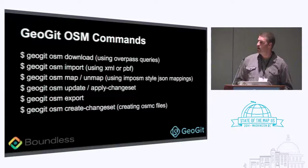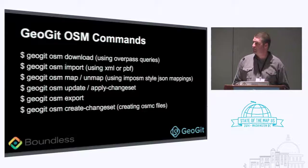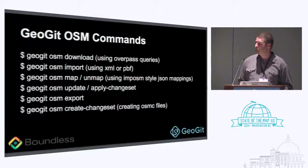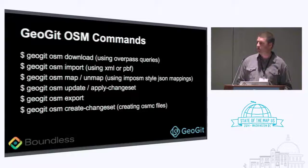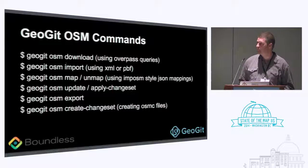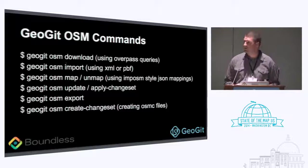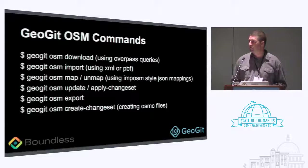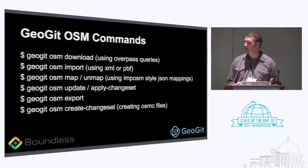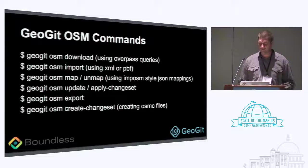You've still got to write the Overpass queries pretty much manually — I wish somebody would write a nice query interface for that. You can do GeoGit OSM import using XML or PBF files, and then do OSM map or unmap using Imposm-style JSON mapping, which converts the nodes and ways into layers like we're used to working with in traditional GIS. You can also do an OSM update or apply a change set to keep in sync with Planet, and export out to OSM files or create a change set file to push back to Planet.